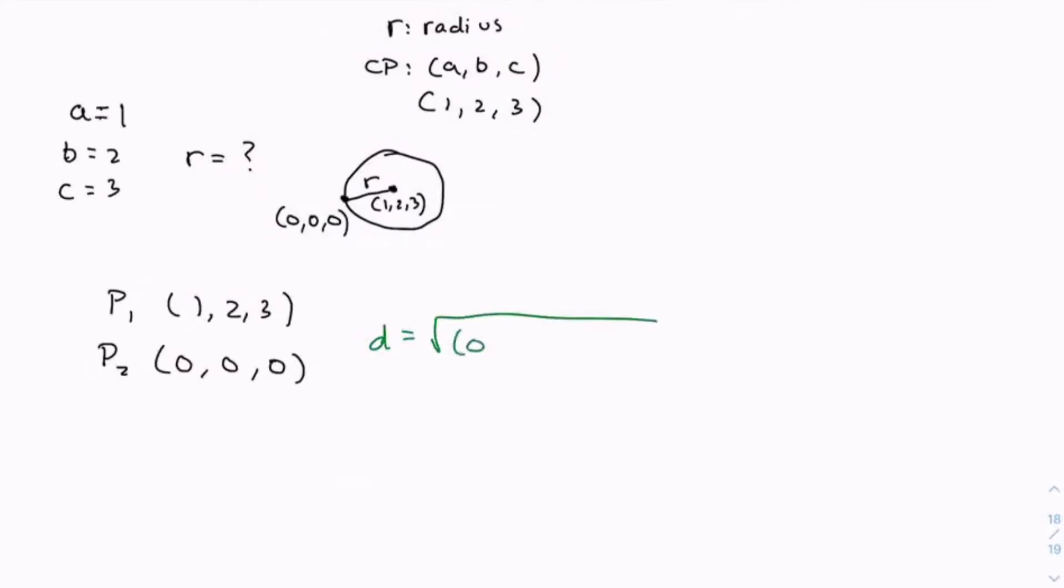So, the square root of (0 - 1)² + (0 - 2)² + (0 - 3)²,